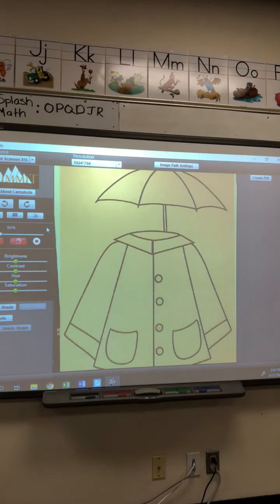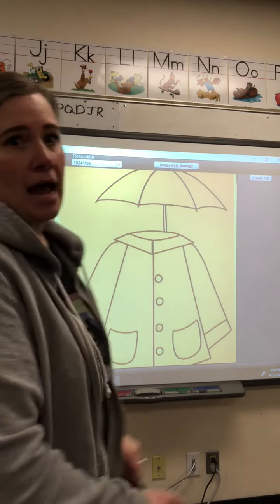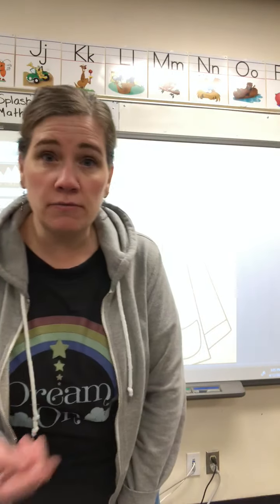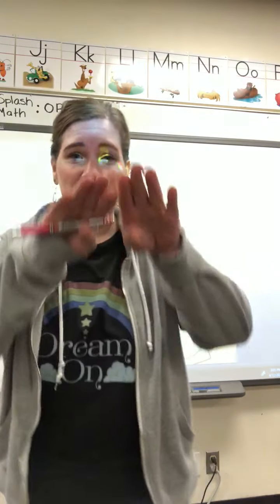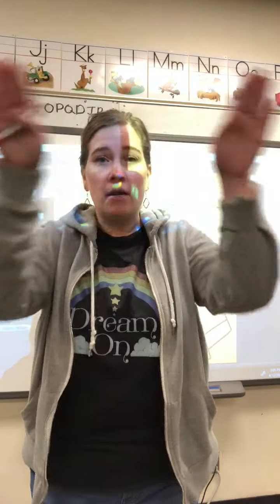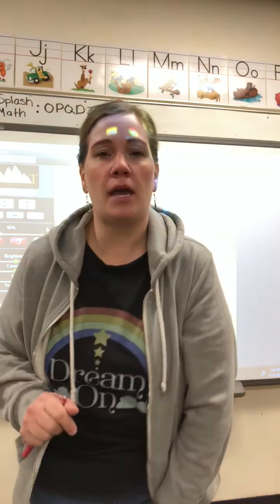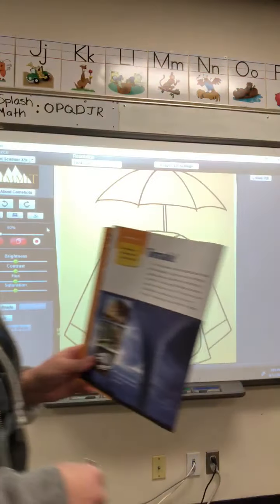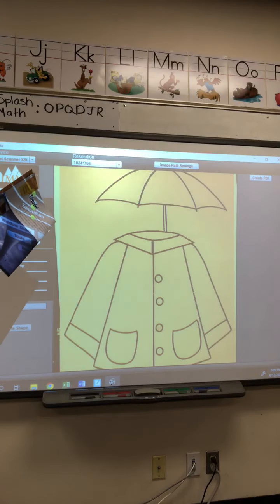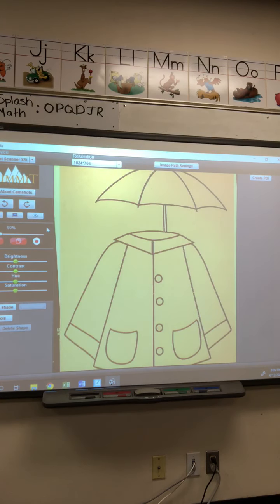We want to identify the main idea. Identify means find. And remember, main idea — remember our umbrellas — what is it mostly about? What I've put up here is just a reminder: this is our raincoat retell. This is to help us remember we're doing nonfiction. It's usually answering the questions like who, what, where, when, why, and how — the five W's and how.